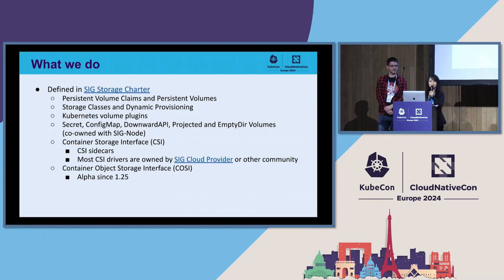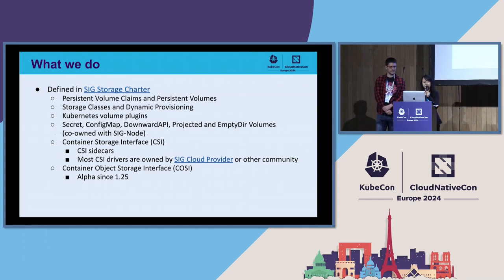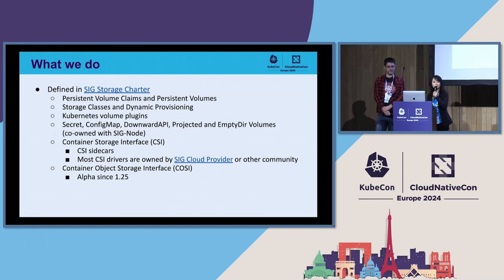What we do in SIG Storage is defined in the SIG Storage Charter. SIG Storage is a special interest group focusing on how to define storage for storage to be consumed by containers running in a Kubernetes cluster. We have persistent volumes, persistent volume claims, storage classes and dynamic provisioning, and volume plugins. In addition to persistent volumes that can store data beyond the pod's lifecycle, we also have ephemeral volumes such as secret config maps and empty dirs that can be used as scratch space for the pod. We support the Container Storage Interface, CSI, that defines common interfaces for a storage vendor to write a driver so that the underlying storage system can be used by containers running in Kubernetes.